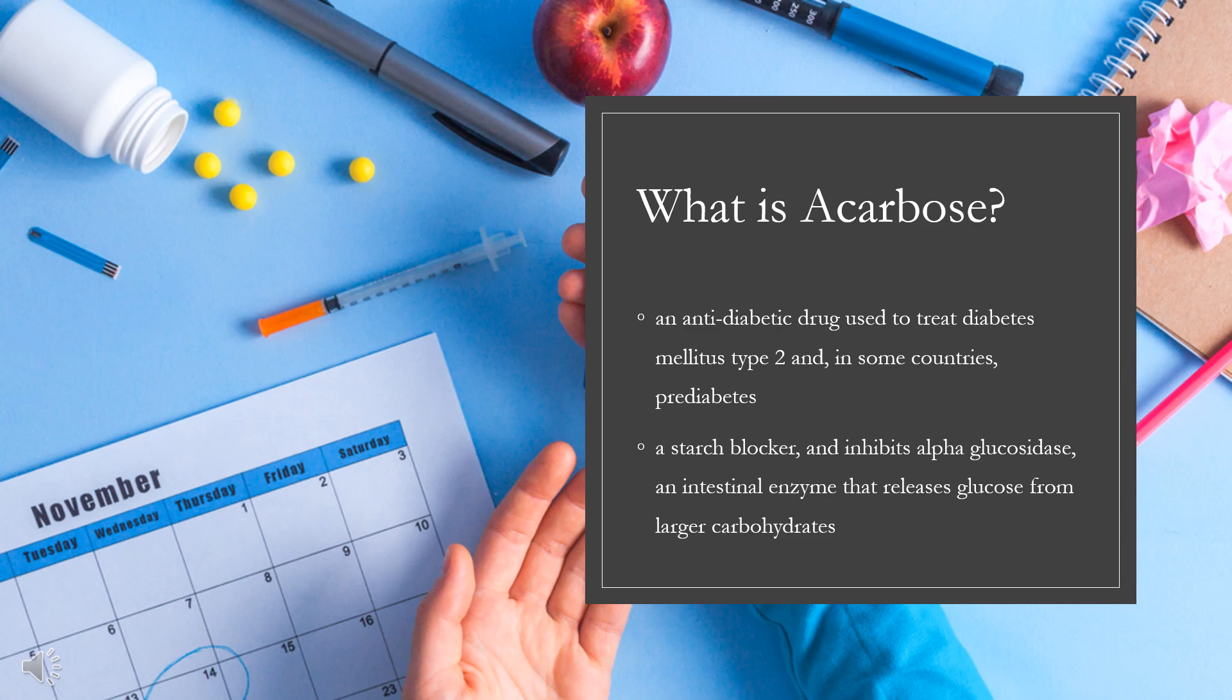Acarbose is a starch blocker and inhibits alpha-glucosidase, an intestinal enzyme that releases glucose from larger carbohydrates. It is composed of an acarbiosin moiety with a maltose at the reducing terminus. Acarbose is also degraded to maltose and acarbiosin by the glucosidase cyclomaltodextrinase from gut bacteria lactobacillus plantarum.